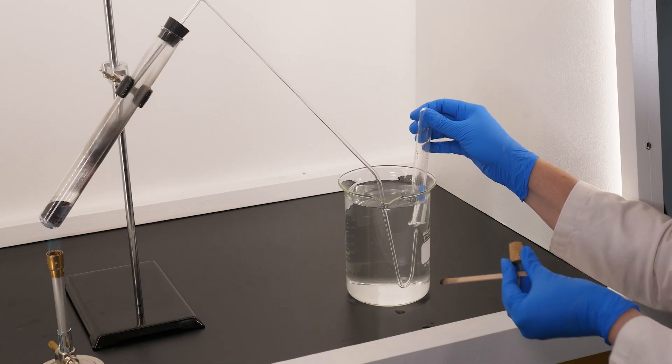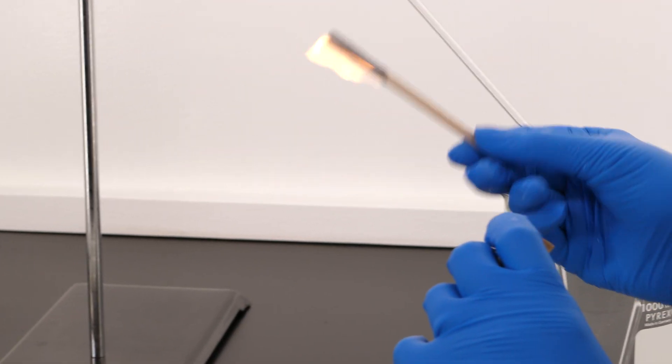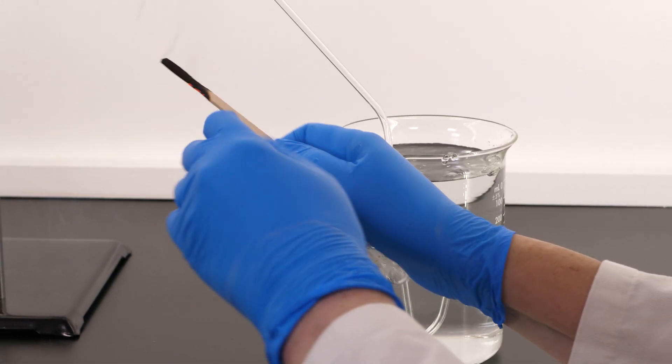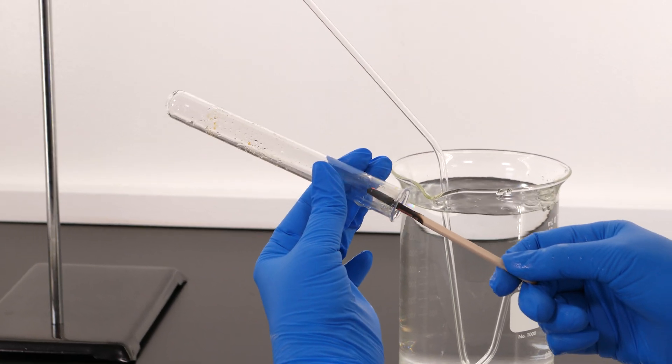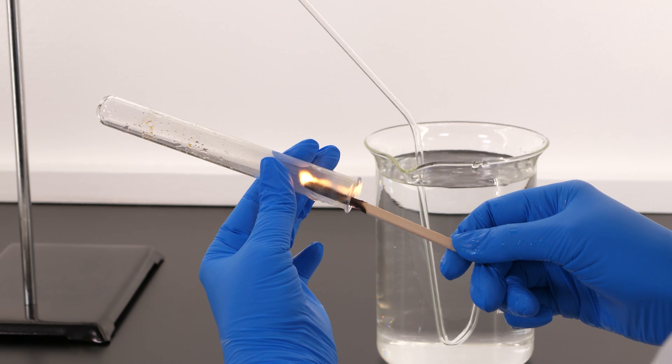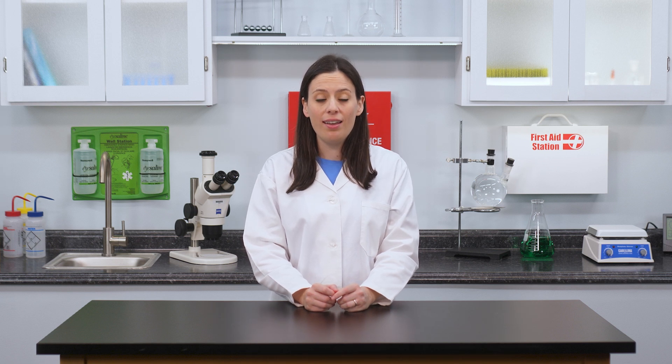Oxygen is an oxidizer that supports combustion. See what happens when we insert a glowing wood splint into the test tube. The fire reignites, proving the existence of oxygen. Through the process of thermal decomposition, the compound mercury(II) oxide has been broken down into two products, mercury and oxygen.